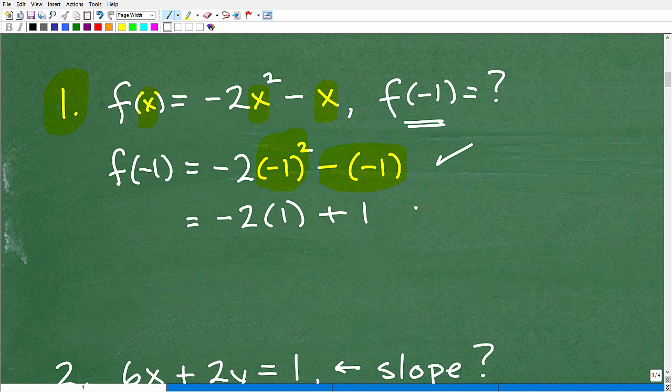And if that's where you're at, that's very good. So let's continue on. So -2 times this positive 1, that's -2 + 1. -2 + 1 is -1. So the answer f(-1) is -1.